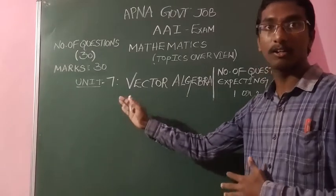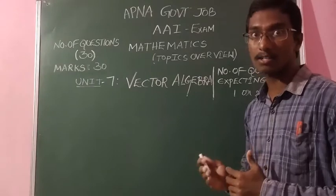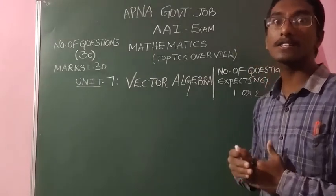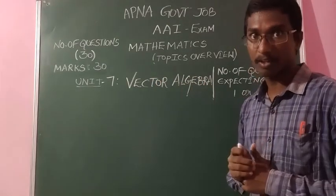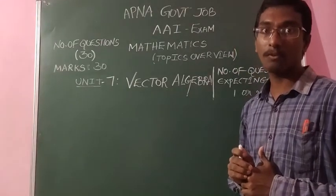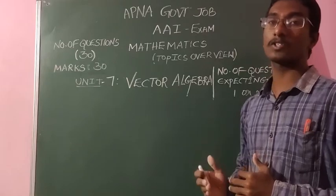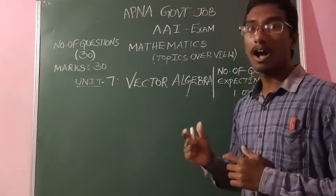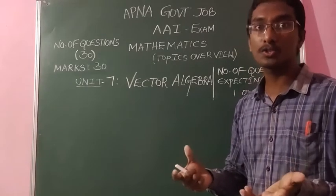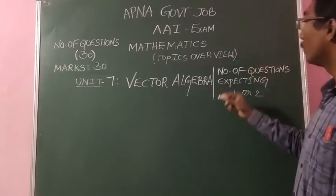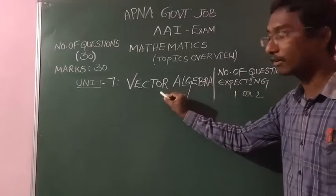After Unit 6, Unit 7 is Vector Algebra. Vectors have magnitude and direction, while scalars have only magnitude. In this unit, we discuss applications of vector algebra in daily life. Subtopics include operations on vectors: addition, subtraction, scalar multiplication, dot product, cross product, scalar triple product, and their geometrical interpretation. By previous year analysis, there is a chance to ask at least one, maximum two questions from this unit.